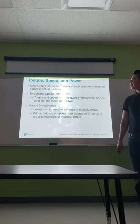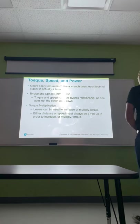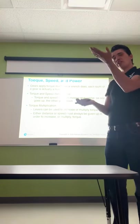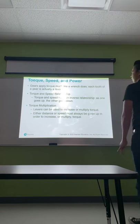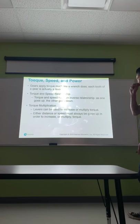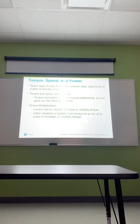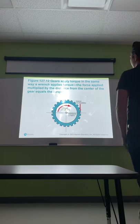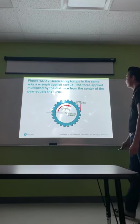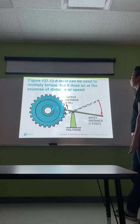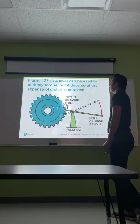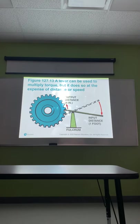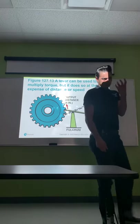Torque and speed have an inverse relationship — as one goes up, the other goes down. The more torque you want, you sacrifice speed; the more speed you want, you sacrifice torque. Levers can be used to increase or multiply torque, but either distance or speed must always be given up. Gears apply torque the same way a wrench does: force applied multiplied by the distance from the center of the gear equals the torque. We can increase torque but we'll lower our actual speed — so you can have a lot of power to take off the line but sacrifice top speed later.